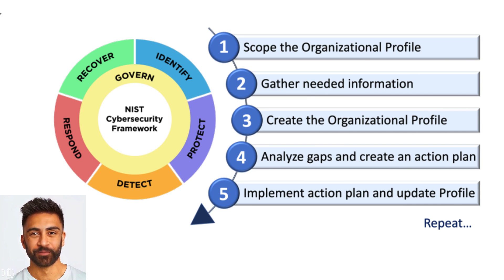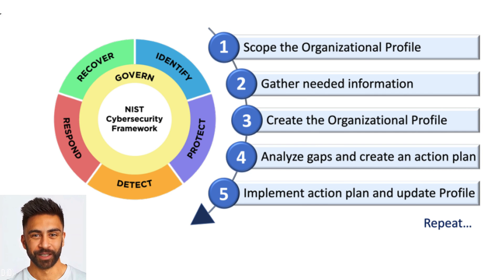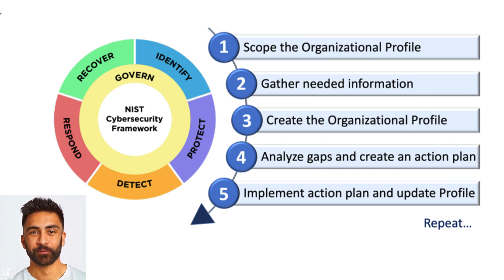The NIST CSF consists of five core functions: identify, protect, detect, respond, and recover. The Identify function helps organizations develop an understanding of their cybersecurity risks and critical assets. Key activities include asset management, business environment understanding, governance, risk assessment, and risk management strategy.